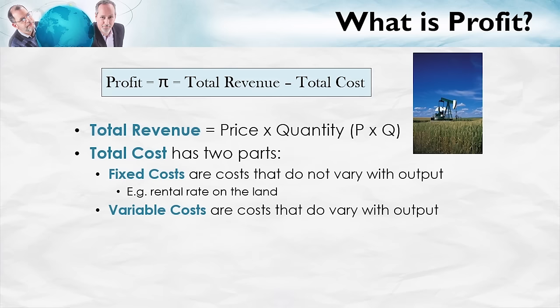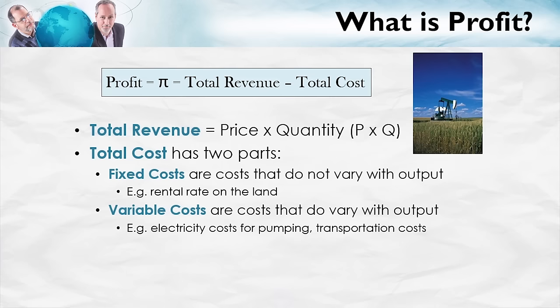The second part of total cost is variable costs — these are costs that do vary with output. For example, the electricity costs for pumping oil: the more oil you pump, the faster you run your rig, the more electricity you use. If you run it 24 hours a day, you'll use more electricity than if you only run the pump 12 hours a day. Transportation costs are also variable — you've got to truck the oil out. These costs increase the more output you produce.